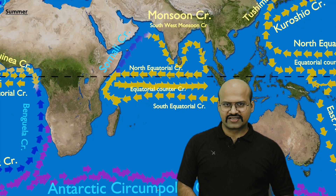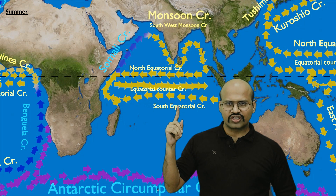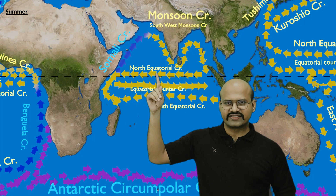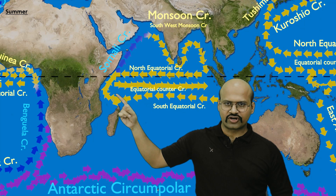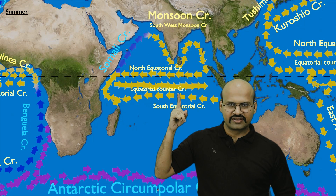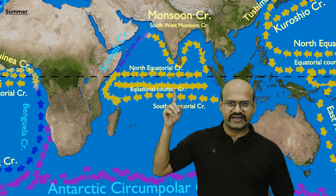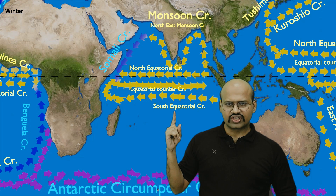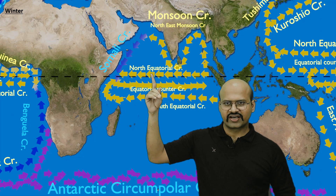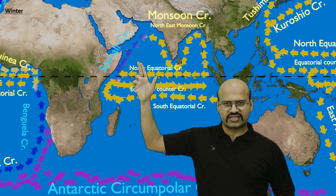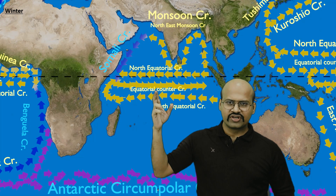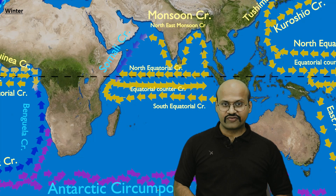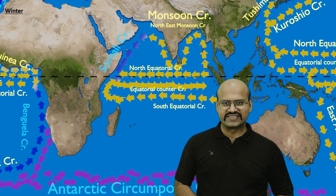In summer the south equatorial current and north equatorial current supply water to the Somali current, leaving very little water for the equatorial counter current, so it is very weak in summer. In winter, the south equatorial current, north equatorial current, and Somali current all supply water to the equatorial counter current, making it very strong in the Indian Ocean during winter.